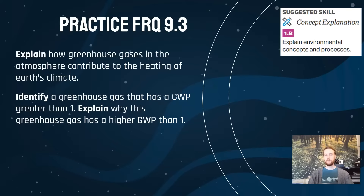For our practice FRQ for 9.3, we'll practice the skill of explaining an environmental concept. Try explaining how greenhouse gases in the atmosphere contribute to the warming of Earth's climate, and then identify a greenhouse gas with a global warming potential greater than one and explain why it has a global warming potential greater than one.